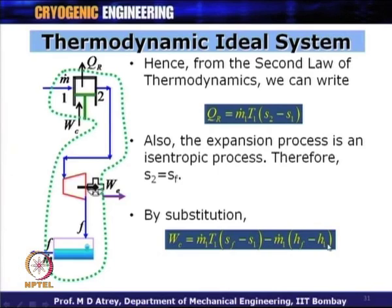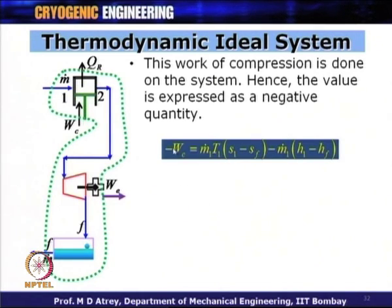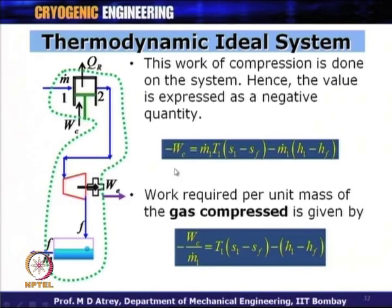This work of compression is done on the system and expressed as a negative quantity. So minus W_C equals M_1 dot × T_1 × (S_1 − S_F) minus M_1 dot × (H_1 − H_F). Work required per unit mass of gas compressed equals: minus W_C / M_1 dot = T_1(S_1 − S_F) − (H_1 − H_F).